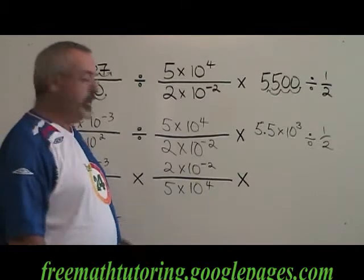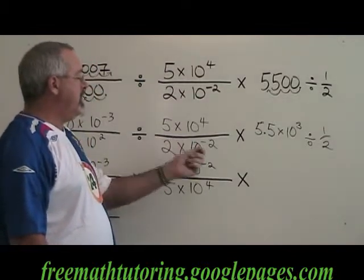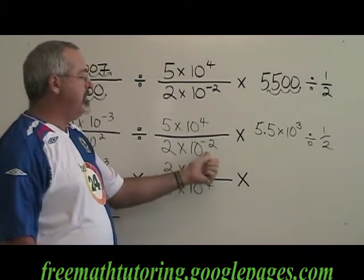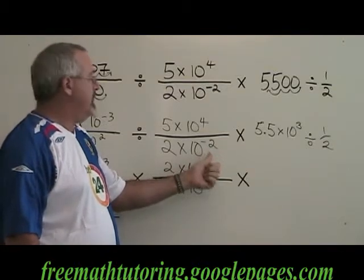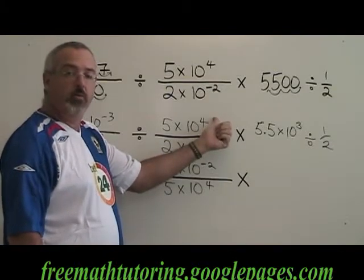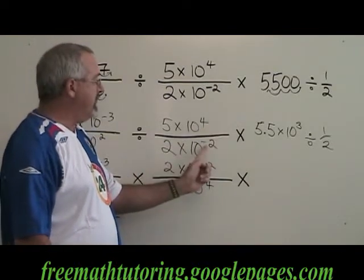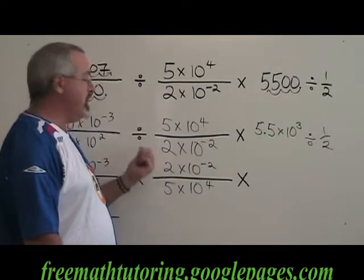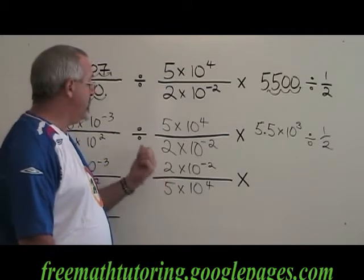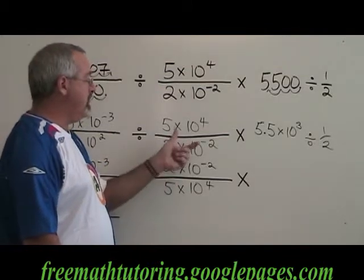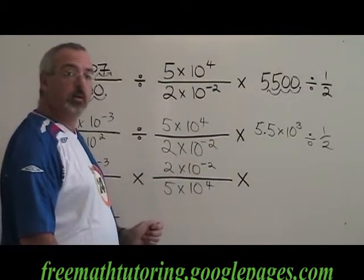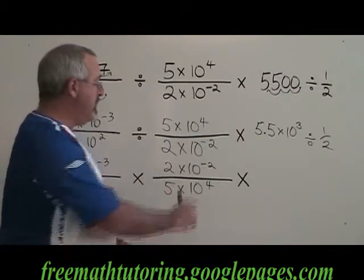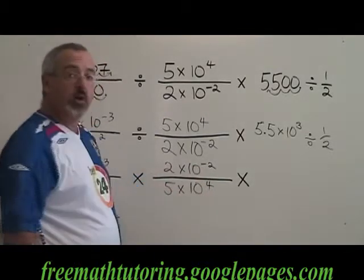Be careful not to mix this up with the operation where you might move 10 to the negative 2 to the top into the numerator and convert the negative exponent into a positive one. It's not the same operation. Here we are doing the operation we learned in elementary school where when you divide a fraction, you turn it upside down and you multiply instead. Because that's what we're doing, the signs of the exponents do not change.